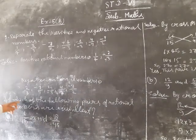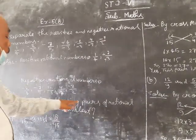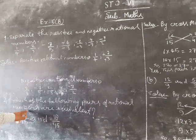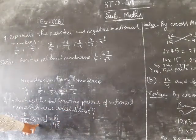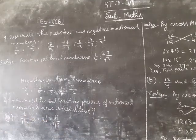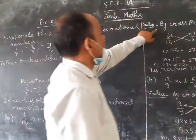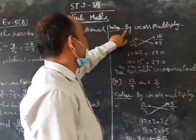Next question number 2. Which of the following pairs of rational numbers are equivalent? Part number A, 6 upon 50 and 15 upon 45. Solved by cross-multiplying.